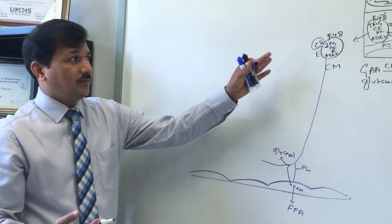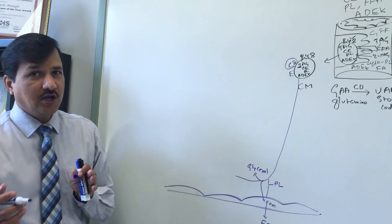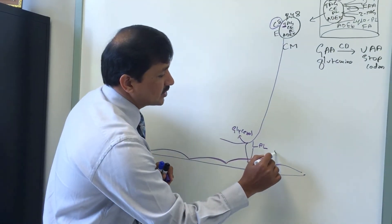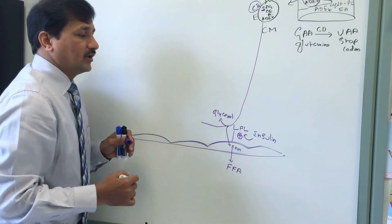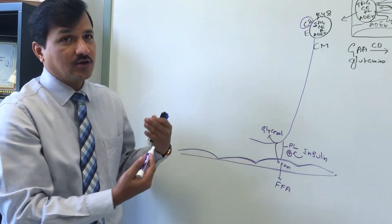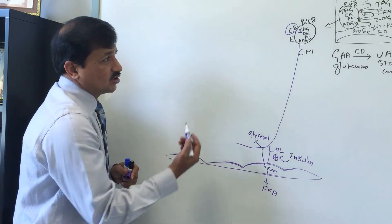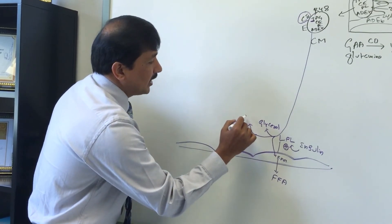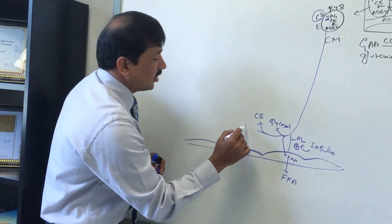In the liver, glycerol is converted to glycerol-3-phosphate, which can be used to make triacylglycerol, or it can be converted to dihydroxyacetone phosphate (DHAP) and enter glycolysis. Chylomicron metabolism occurs in the well-fed condition, and insulin stimulates lipoprotein lipase — so in the presence of insulin, LPL expression increases and chylomicron metabolism increases.